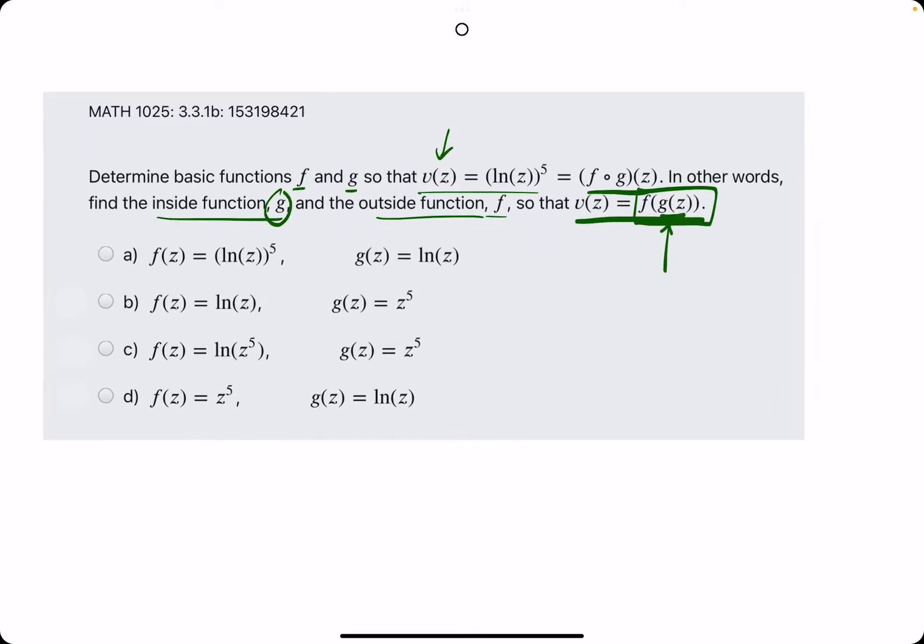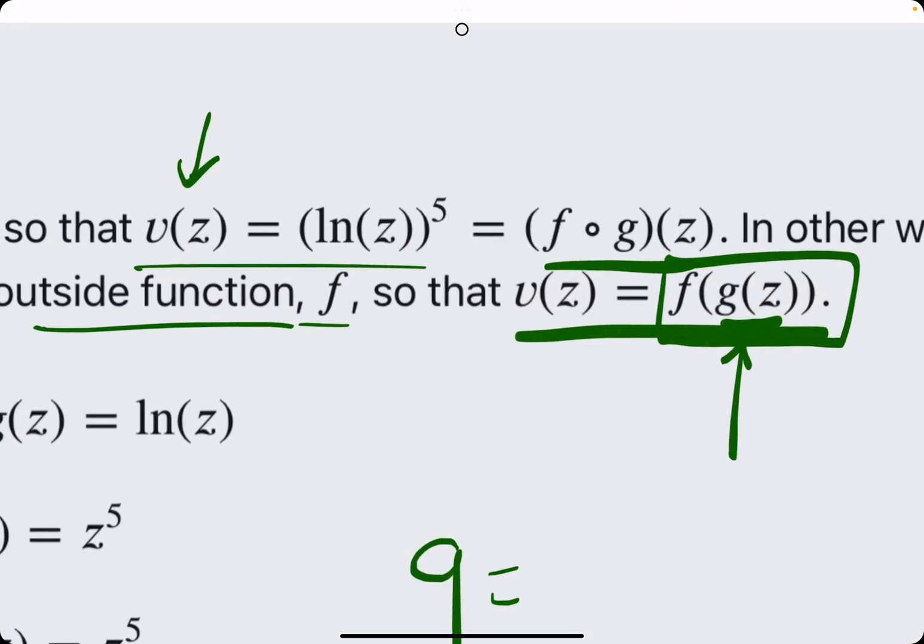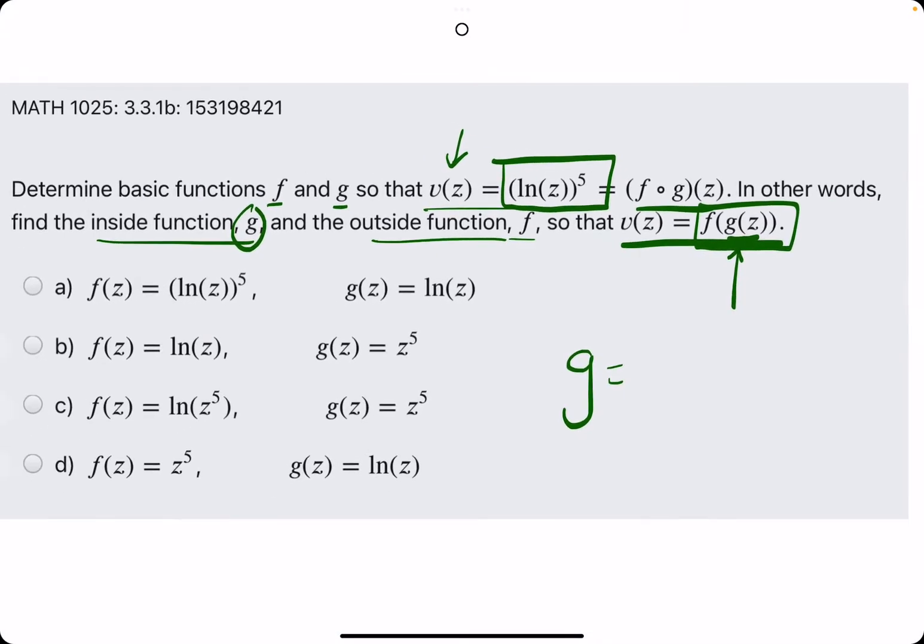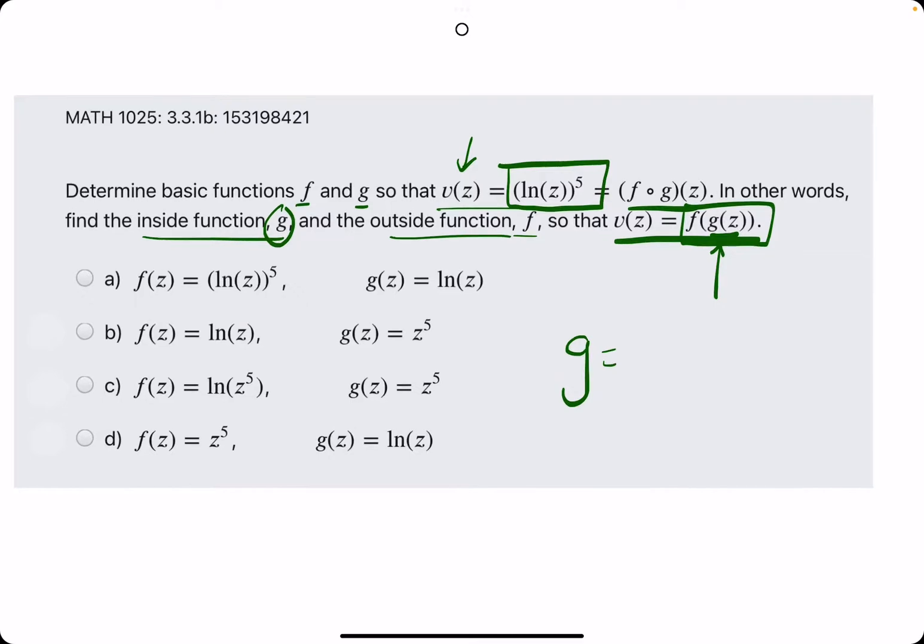So the easiest way to go about this, I think, is identify what g is first. g will always be the inside function. And so when we look at this and we have to pick an inside and outside piece, or label an inside and outside piece,